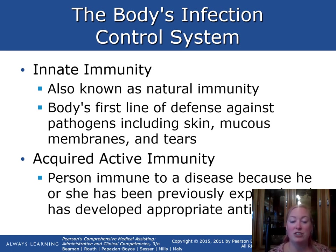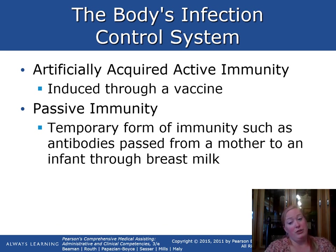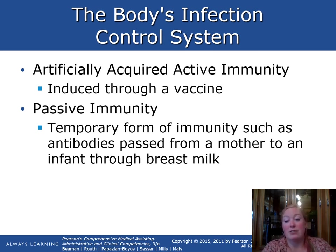Innate immunity is known as natural immunity — the body's first line of defense, including skin, mucous membranes, and tears. Acquired active immunity occurs when a person has been previously exposed to a pathogen and developed appropriate antibodies. Artificially acquired active immunity is induced through vaccination. Passive immunity is a temporary form, such as antibodies passed from mother to infant through breast milk.